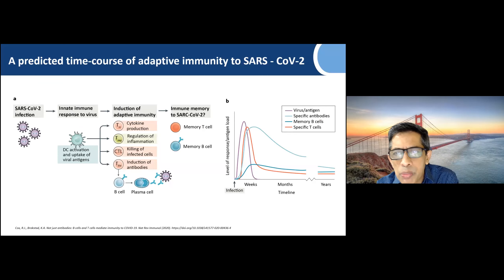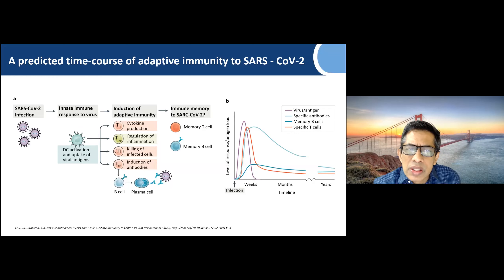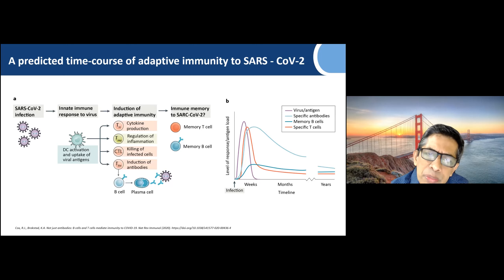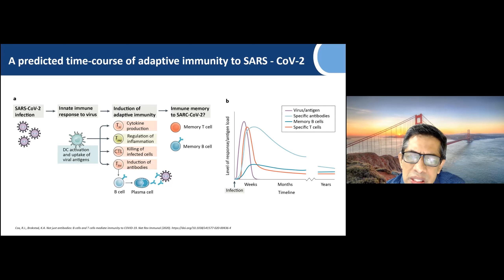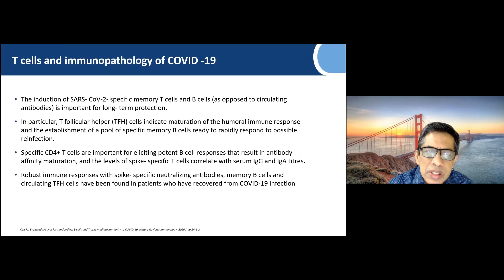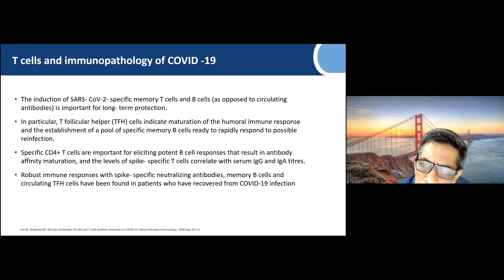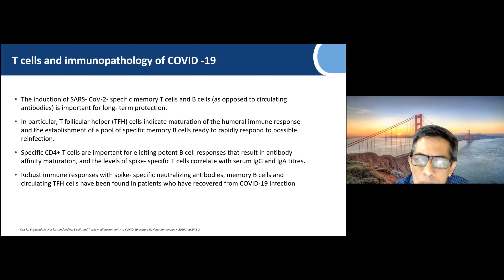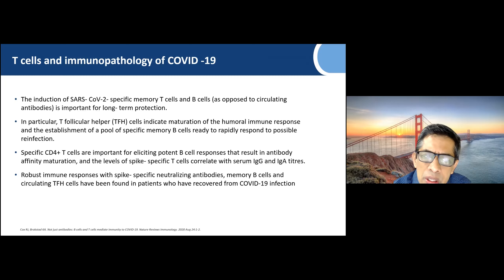When SARS-CoV-2 is inhaled, there is an innate immune response, dendritic cell activation and uptake of viral antigens, and induction of adaptive immunity. This leads to Th helper cells making cytokines, T regulatory cells regulating inflammation, cytotoxic T cells killing infected cells, and follicular cells inducing antibodies from B and plasma cells, along with memory T and B cells. Induction of SARS-CoV-2-specific memory T and B cells is important for long-term protection. T follicular helper cells indicate maturation of the humoral immune response and establishment of memory B cell pools.